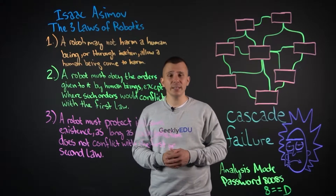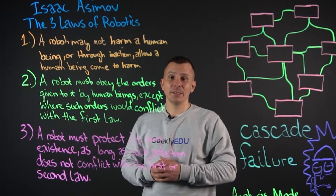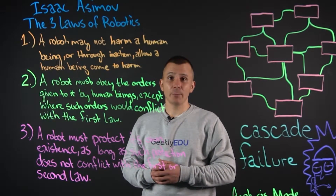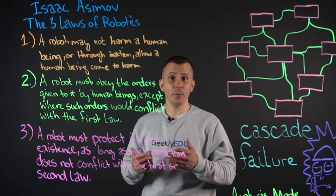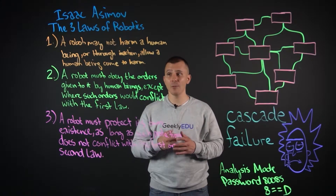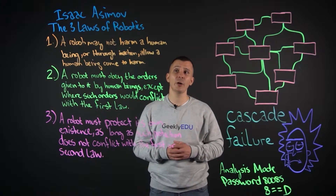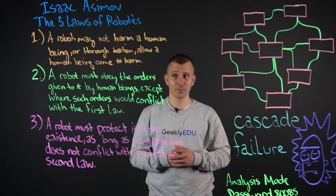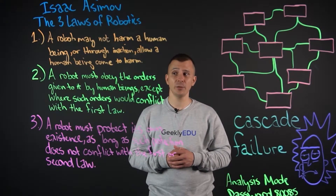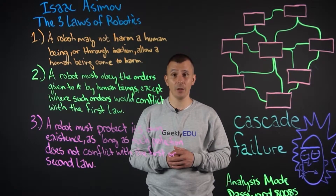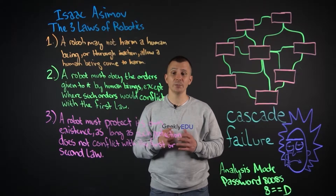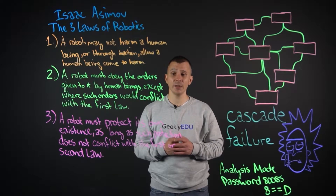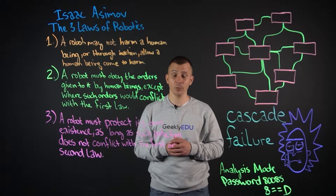First of all, who is Isaac Asimov? Isaac Asimov was a biochemistry professor and also a prolific science fiction author. He is who created the three laws of robotics. The first law is that a robot may not harm a human being, or through inaction allow a human being to come to harm. Number two: a robot must obey the orders given to it by human beings, except where such orders would conflict with the first law. And the third law: a robot must protect its own existence as long as such protection does not conflict with the first or second law.